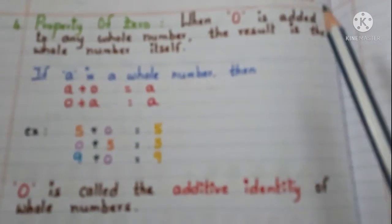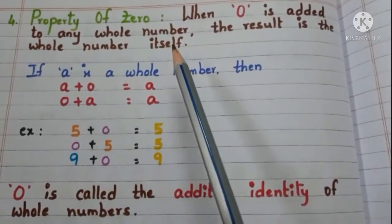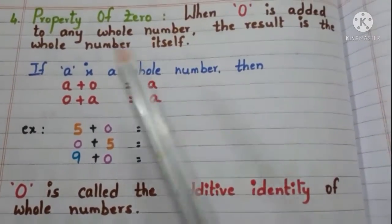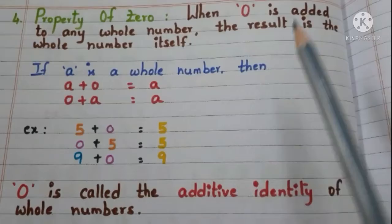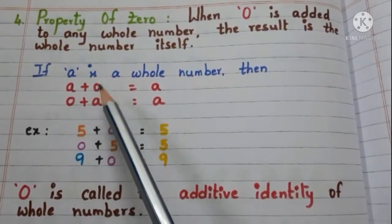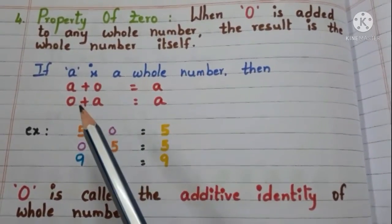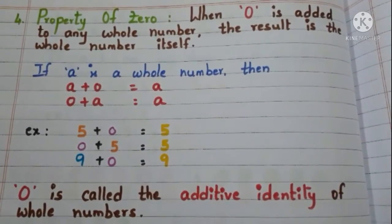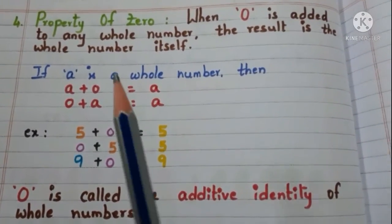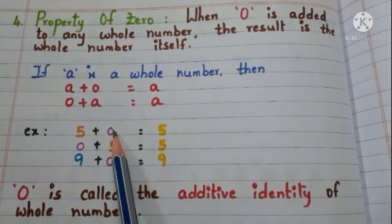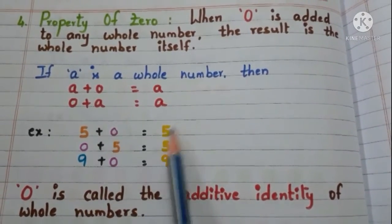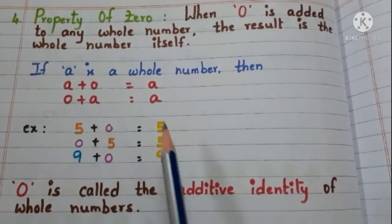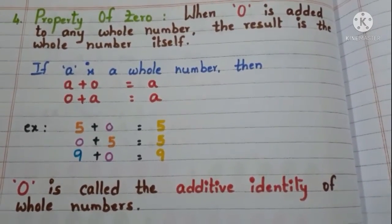Now property of 0. When 0 is added to any whole number the result is the whole number itself. If a is a whole number then a+0 equals a or 0+a equals a. Let us see with the example. Add 5 and 0. 5 plus 0 is equal to 5. Now add 0 and 5. 0 plus 5 is equal to 5.